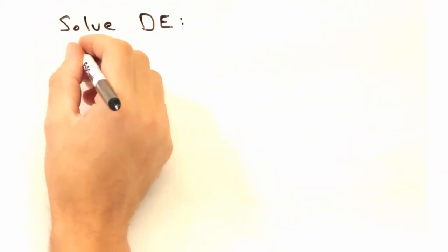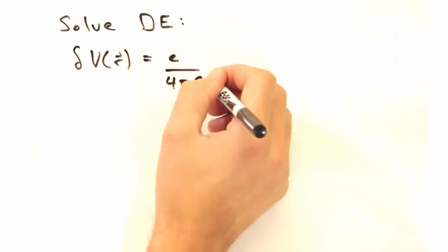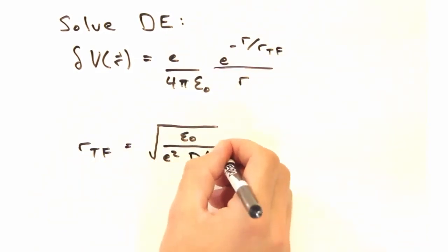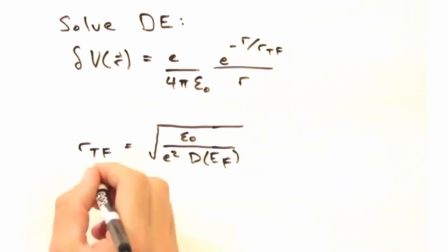Rather than solving it out, here's the solution to how the potential changes with this perturbation. The potential varies with R, and we introduce this term R sub Tf, where the Tf comes from Thomas Fermi.